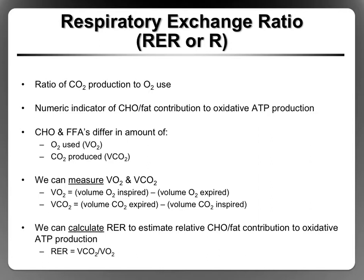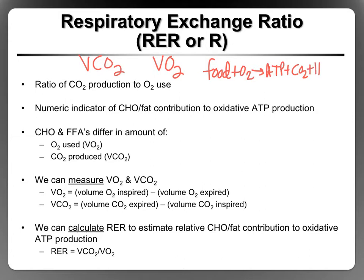Respiratory exchange ratio is often called RER, or just R. RER is the ratio of CO2 production — also known as VCO2 — to oxygen use, also known as VO2, which we talked about in the last recording. When we are oxidizing our food, we use oxygen and produce ATP, CO2, water, and heat. The ratio between CO2 produced and oxygen used is called RER, and you're going to learn how to calculate it.